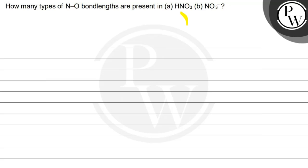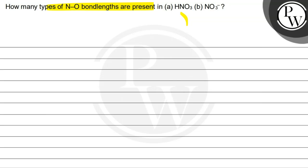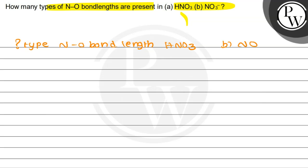Hello Bachu, let's read the question. The question says: how many types of NO bond lengths are present in HNO3 and NO3-? So, this question asks how many types of NO bond lengths are present in HNO3 — that is one compound — and also in NO3-.